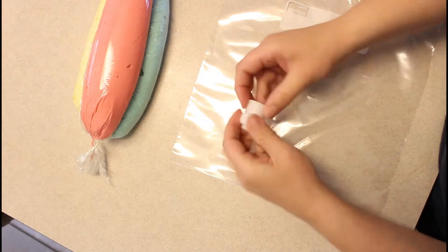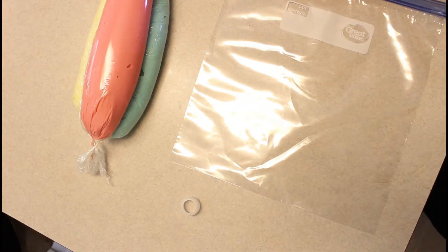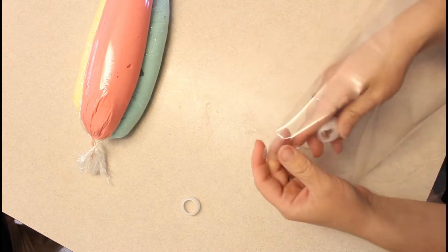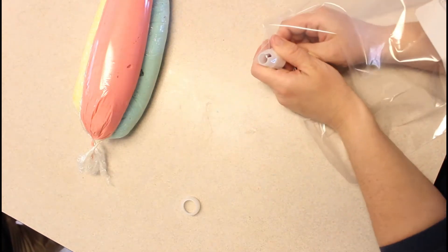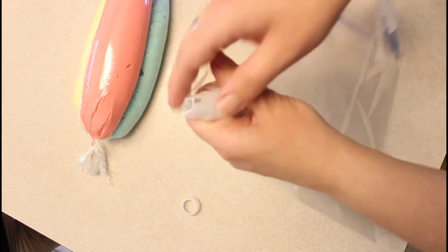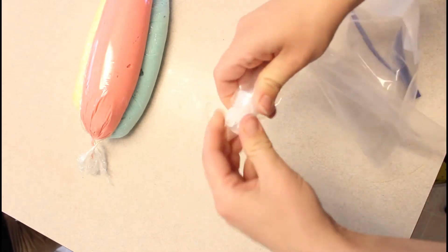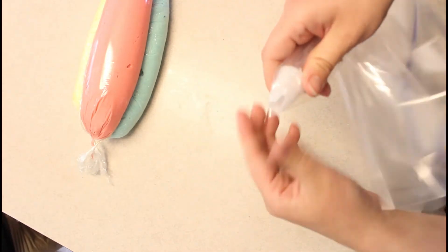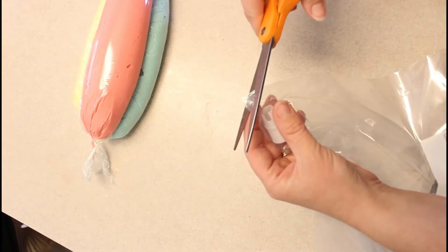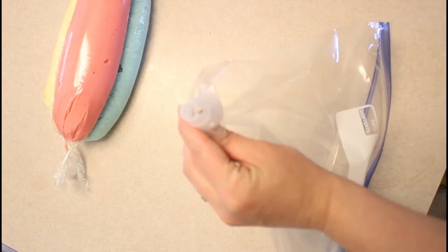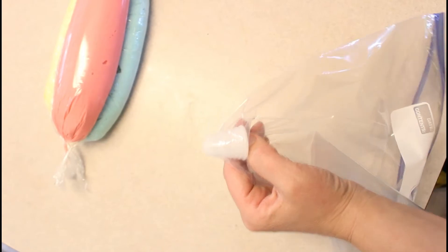If you have a piping bag, grab one of those. If you have piping tips, grab some of those. For me personally, I don't want to spend money on a piping bag. I had some piping tips from several years ago I got from one of my daughters for a present. We don't have any of the tips anymore, just these white things that go in there. So I'm going to use those with no tip just to kind of reinforce the corner.